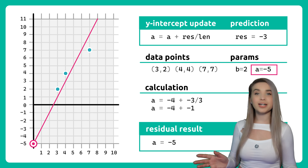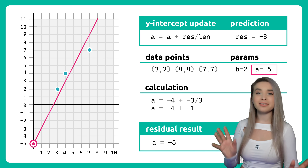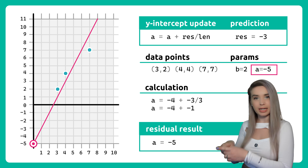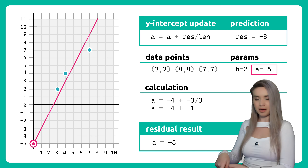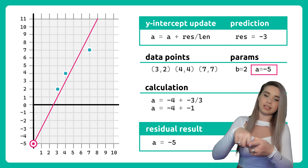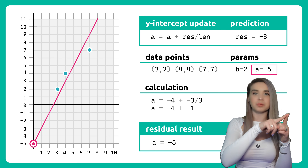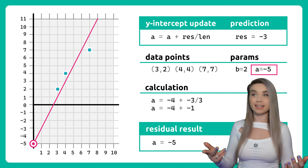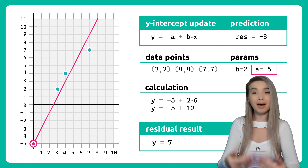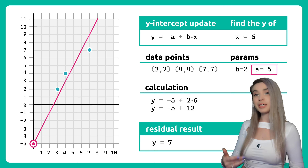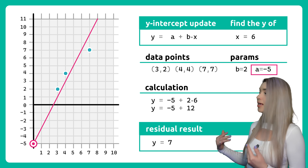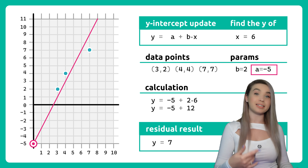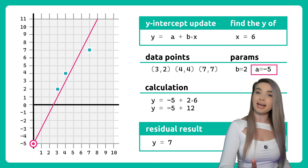We can then sketch our new best-fitting line all the way from the y-intercept, passing it as close as possible to our three data points. And with the updated values,